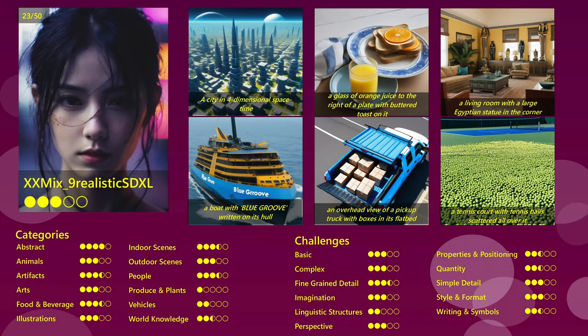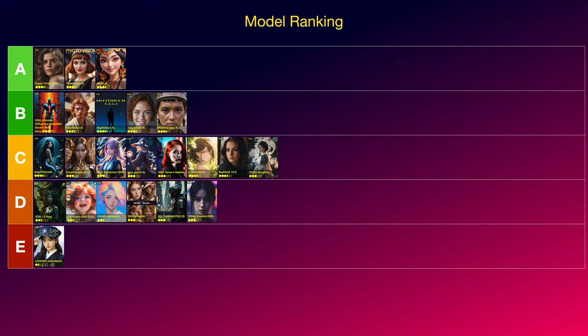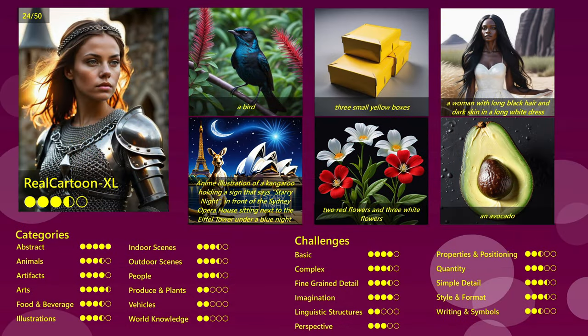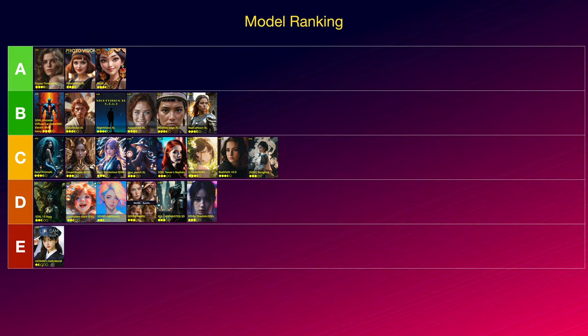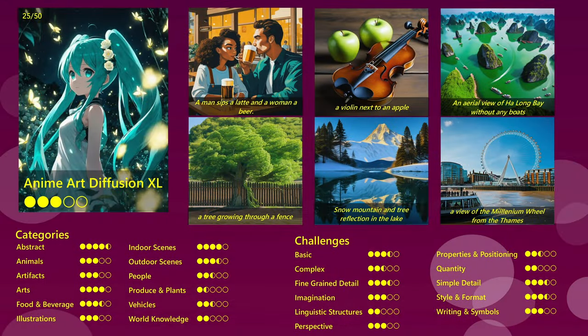Same is true for the XXMix9 Realistic SDXL. Some images were decent, though not outstanding, and others were just really bad. Sorry again, but I have to put it into the D tier. Real Cartoon XL was much better, especially with abstract scenes and art. Overall it gave me a solid impression, with good quality and fine details. It is not my favorite model, but I am putting it into B. Now here comes Anime Art Diffusion XL, which performed well at abstract scenes, but only average or even below average at most other categories. The images created were often quite okay, but it really has quality issues, so it is going into D.